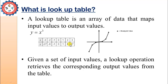Whenever you provide any value to the system, the system will produce some output. The value may be the exact breakpoint from the data provided in the lookup table, or it may be in between the values, or it may be outside the values. These cases are called interpolation and extrapolation.